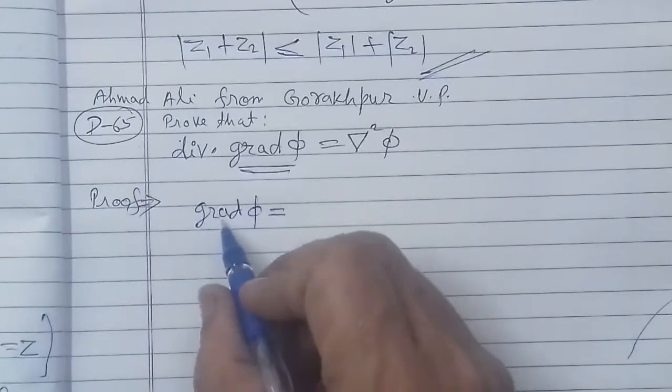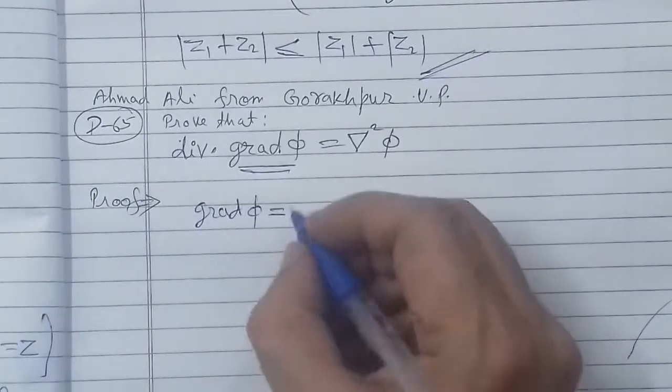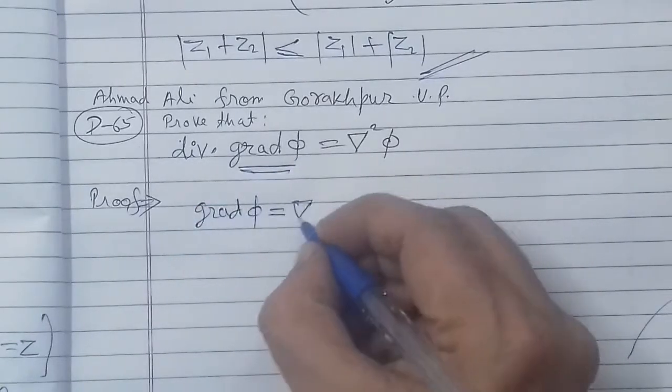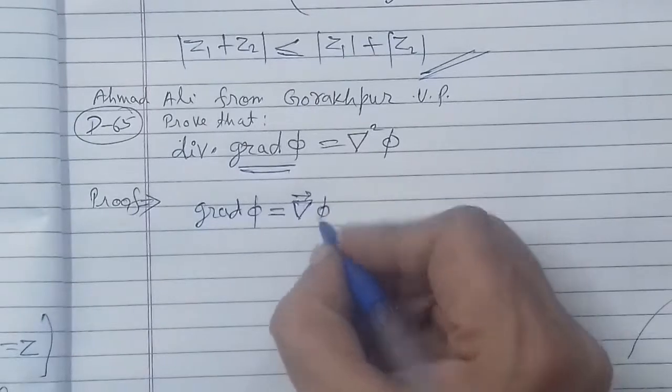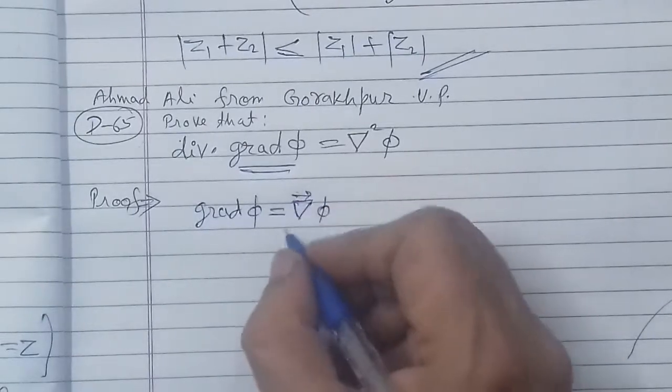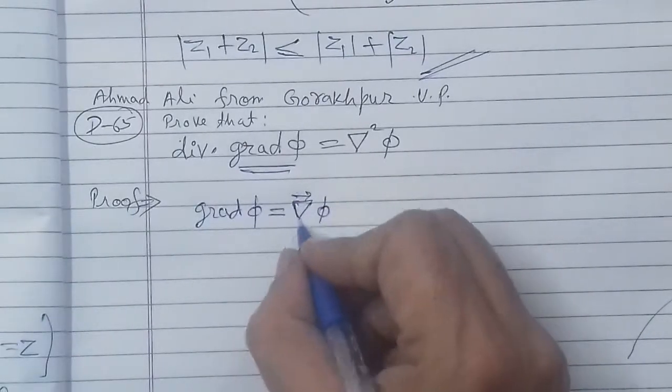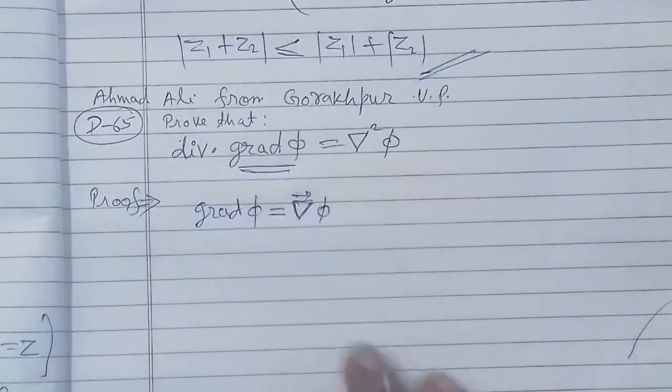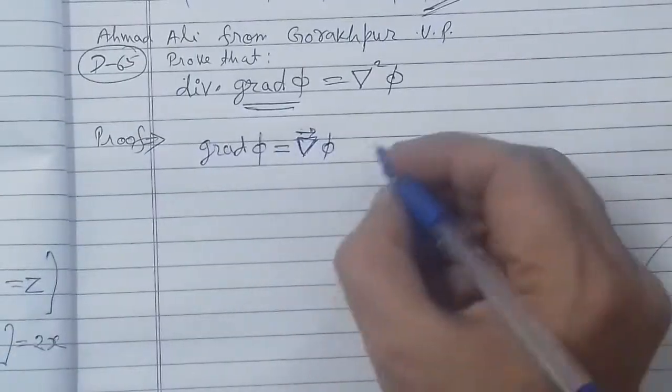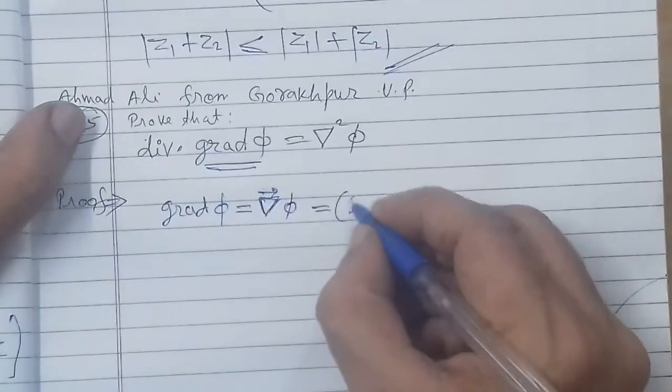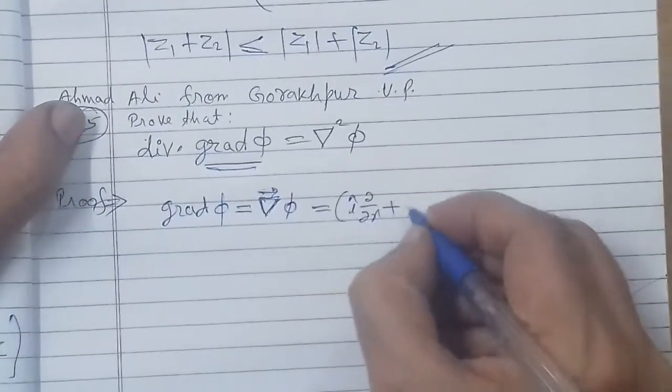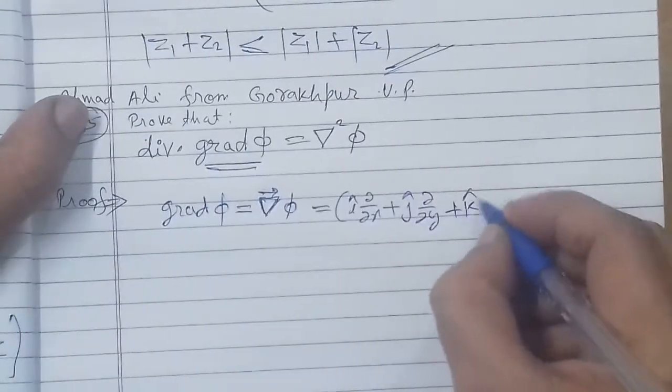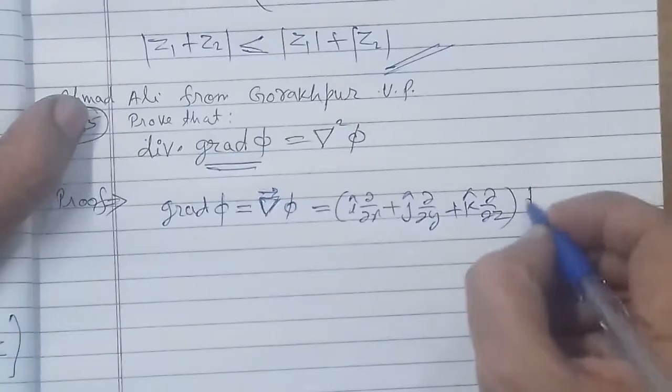First we will write the value of gradient phi. So gradient phi is, we put del, then we put phi. Vector we can indicate here. This del which is an operator, this is a vector operator. And its value we all know: del's value is i cap del over del x plus j cap del over del y plus k cap del over del z. And on phi...